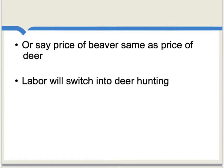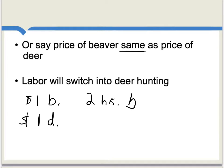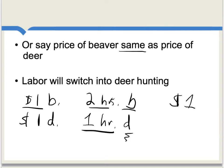Considering how the equilibrium might not hold in the other direction, let's say that the price of beaver is the same as the price of deer — one dollar for a beaver and one dollar for a deer. It takes two hours to kill a beaver and one hour to kill a deer. With two hours of hunting, you could kill one beaver, which is selling for one dollar — a return of one dollar. Alternatively, you could use the two hours to kill two deer at one dollar each, giving a return of two dollars. In that case, the return to hunting deer is higher than the return to hunting beaver — also not in equilibrium. Labor will adjust: more people will hunt deer and fewer will hunt beavers until the price of beavers goes up and the price of deer goes down, and equilibrium is reestablished.